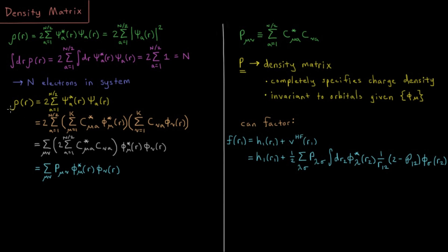Now let's think about this in terms of our basis functions. We have our charge density which is twice the sum from a equals 1 to n over 2 of psi star a psi a. Each of these can be expressed as a linear combination of basis functions. For psi star, that's c star mu a phi mu star, and for psi a, that's c nu a phi nu.